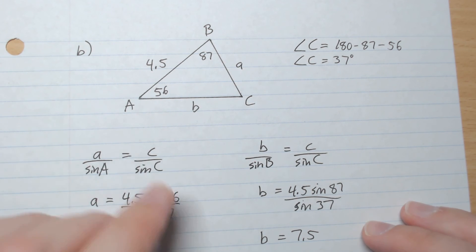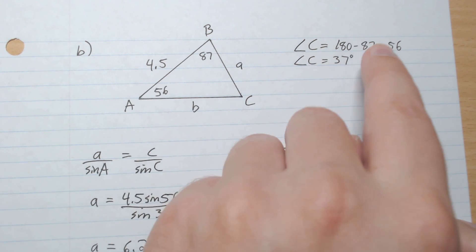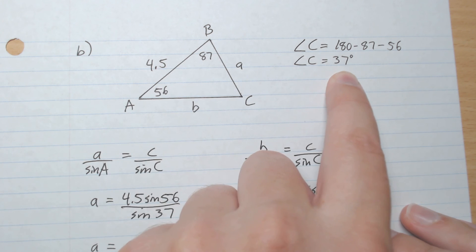Part B. We have two angles here, so the third one: 180 minus 87 minus 56 gives 37.